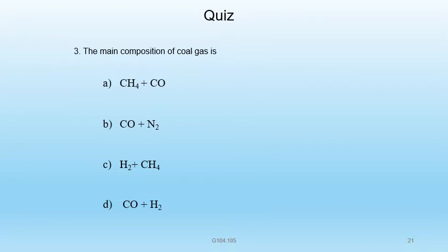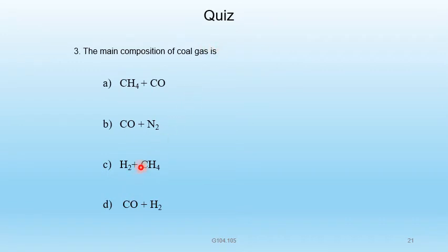Question 7 — The main composition of coal gas is: A) CH4 + CO, B) CO + N2, C) H2 + CH4, D) CO + H2. The main composition of coal gas is H2 + CH4. C is the correct answer.